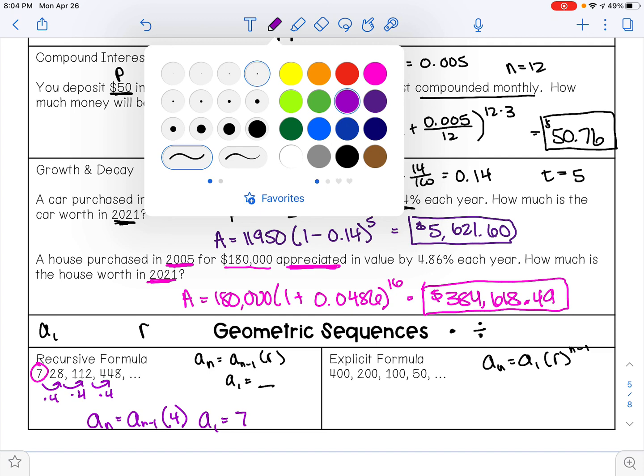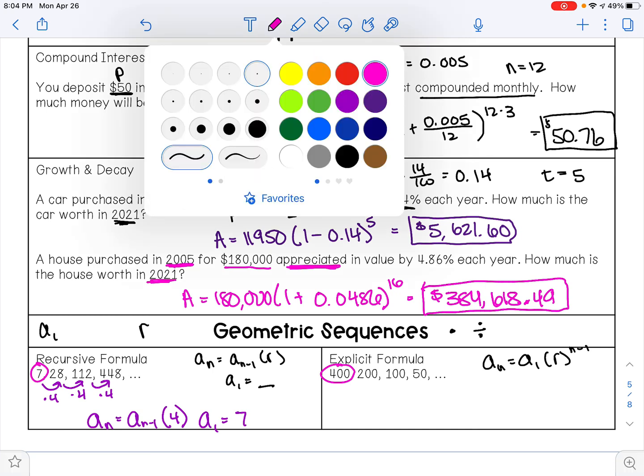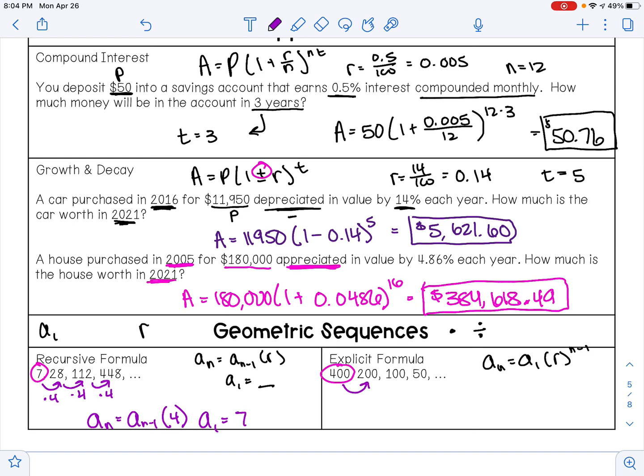And on this last example, my explicit formula would be... let's see, 400 is my first term, so that's a sub 1. To go from 400 to 200, I'm multiplying by 1/2. From 200 to 100, I'm multiplying by 1/2, and from 100 to 50, I'm multiplying by 1/2.